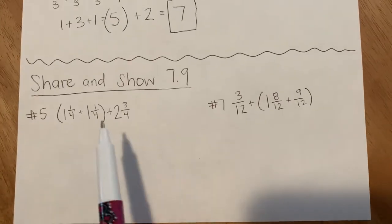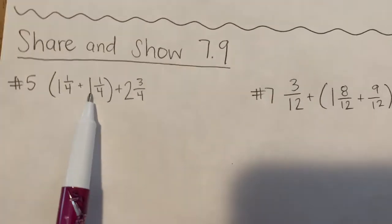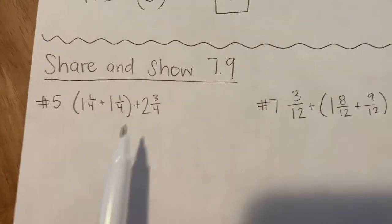So for number 5 we have 1 and 1 fourth plus 1 and 1 fourth plus 2 and 3 fourths.